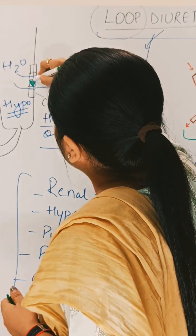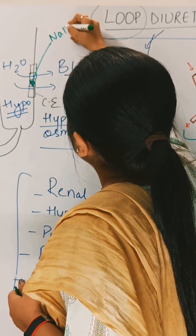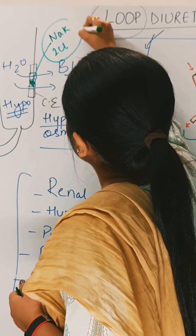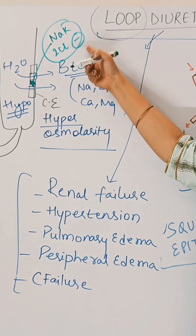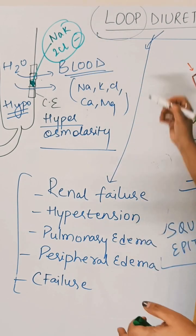So here is the cotransporter: sodium, potassium, chloride cotransporter. This ion channel is blocked by loop diuretics. So this is the targeted site of loop diuretics.